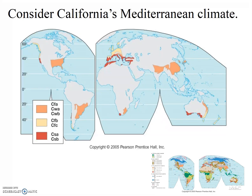California has what's called a Mediterranean climate, denoted on this map in red. The Mediterranean climate is actually the smallest of all the climate types in terms of the area of the earth that it covers. Can you figure out what all of those locations in red have in common in terms of their location?